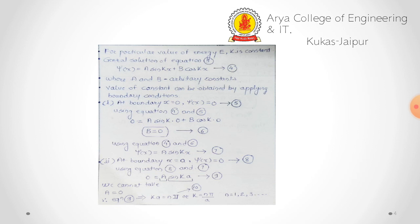Putting B = 0 into the equation, the new equation is ψ(x) = A sin(kx). Applying the second boundary condition at x = a, ψ(x) = 0: 0 = A sin(ka). Since A cannot be 0, we must have sin(ka) = 0, giving ka = nπ, or k = nπ/a. Here n is the quantum number with values n = 1, 2, 3, and so on.